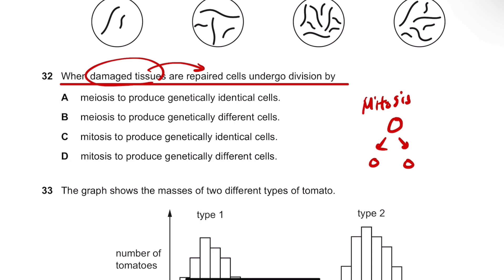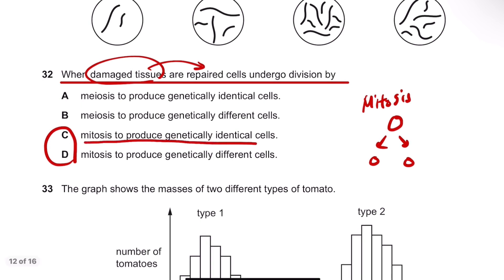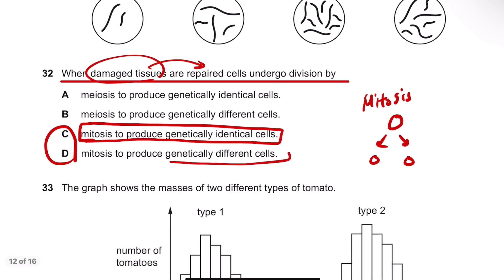So the answer should be either C or D. Mitosis produces genetically identical cells, so the answer should be C. The genetically different cells are formed by meiosis, not mitosis.